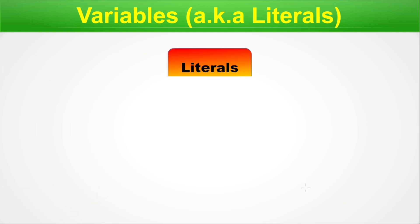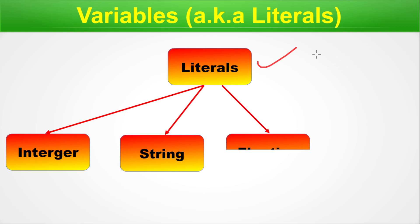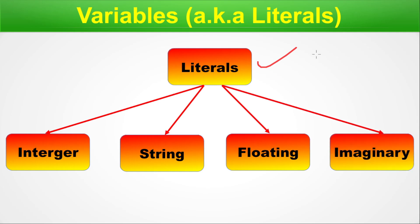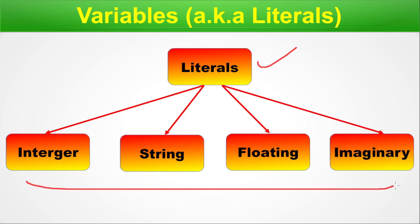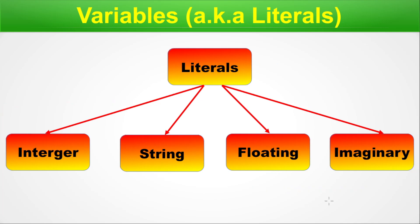Variables are also known as literals. We classify literals in Python into four branches: integer, string, floating numbers, and imaginary. All four types of literals exist within Python. Note that what we call a floating number in programming is called a real number in mathematics — both refer to the same thing.